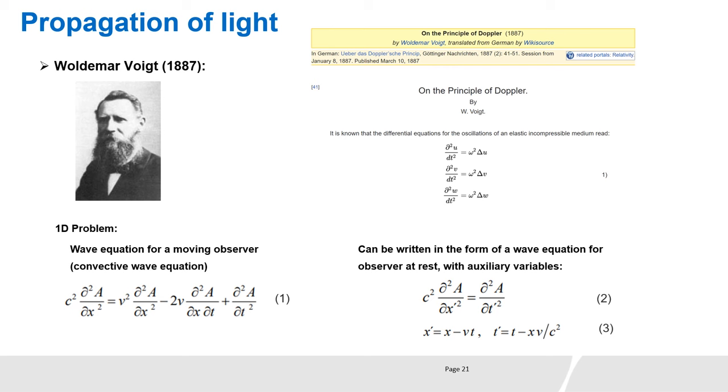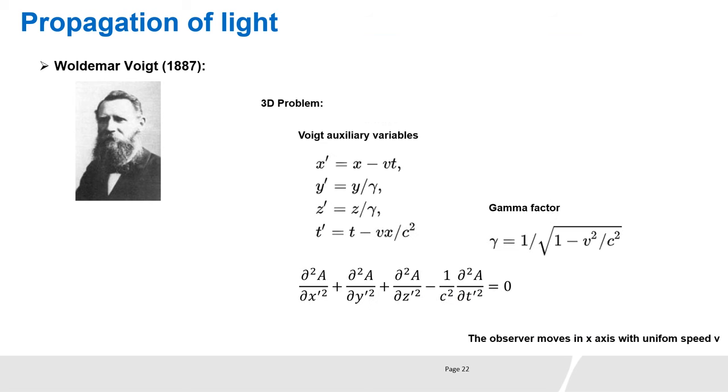In three-dimensional space, Voigt's wave equation requires four auxiliary variables which are functions of the three variables of space, x, y and z, and the variable of time, t. One can note the presence of the gamma factor. Here, the observer is considered moving along x-axis with a uniform speed v.